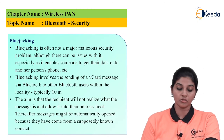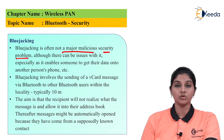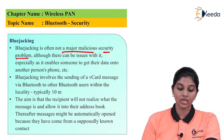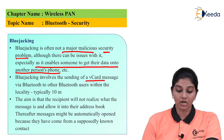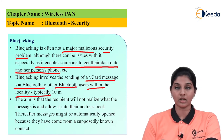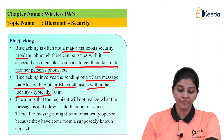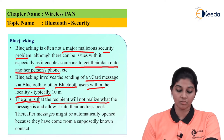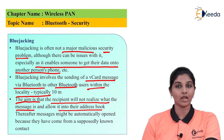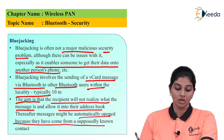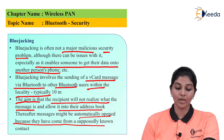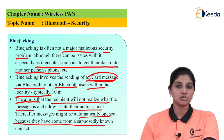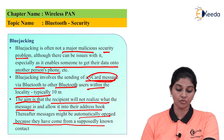The first is bluejacking. Bluejacking is not a major security problem, but there are certain issues with it as it enables someone to get data onto other personal phones. Bluejacking involves sending a vCard message via Bluetooth to other Bluetooth users within a range of typically 10 meters. The recipient may not realize what the message is and allows it into their address book, and because of that the message gets automatically opened as it appears to come from known contacts.